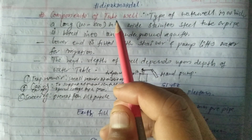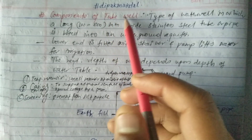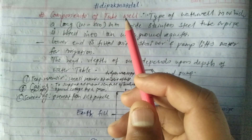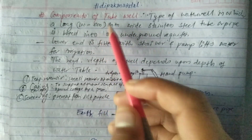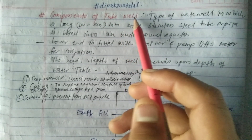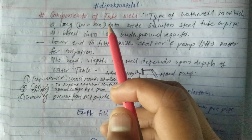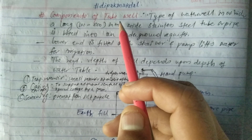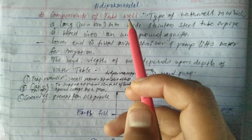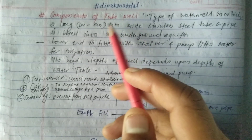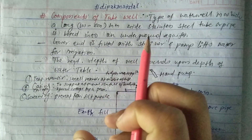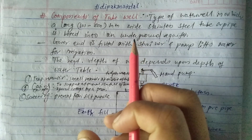Before this video, we already studied about tubule — what is tubule, what is underground water, what is aquifer and types of aquifer. After that we are going to study about the components of tubule. So first we have to know about tubule and aquifer. I have already uploaded videos related to aquifer, the concept of tubule, and types of tubule. I strongly recommend you see those videos first, then you can see the components of tubule and easily understand. I will keep the links in the description box.